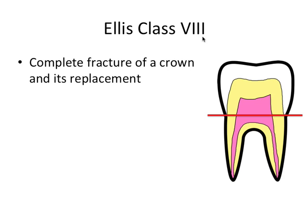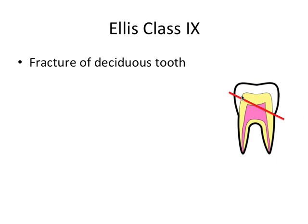Ellis class 8 refers to a complete fracture of a crown and/or its replacement. Ellis class 9 refers to a fracture of a deciduous or primary tooth.